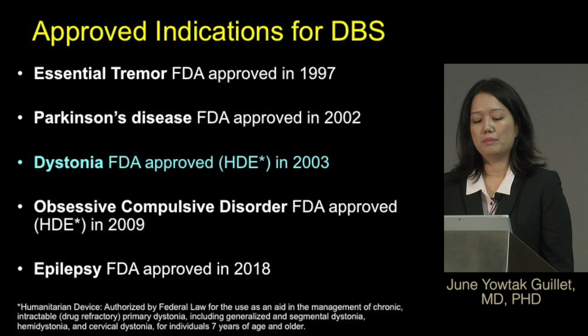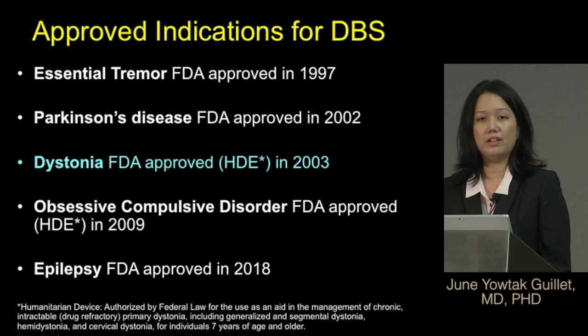DBS has been approved for several indications, mostly in movement disorders. It was approved for dystonia in 2003, and earlier was also approved for essential tremor and Parkinson's disease. Since then, much research has been done to try to use DBS for other diseases.